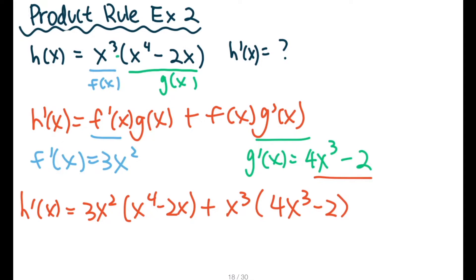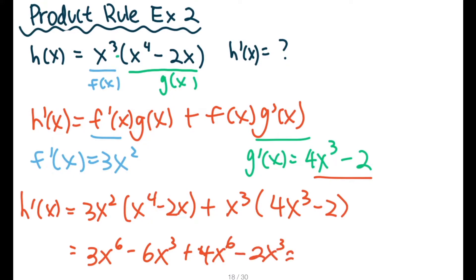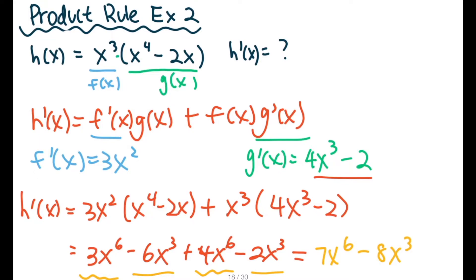Now we just need to simplify. So here we get 3x to the 6th — when we multiply, we add the exponents — minus 6x cubed plus 4x to the 6th minus 2x cubed. Combine like terms: x to the 6th and x to the 6th give you 7x to the 6th. And the x cubed terms give you negative 8x cubed. So this is your answer: 7x to the 6th minus 8x cubed. And that's our second product rule example.